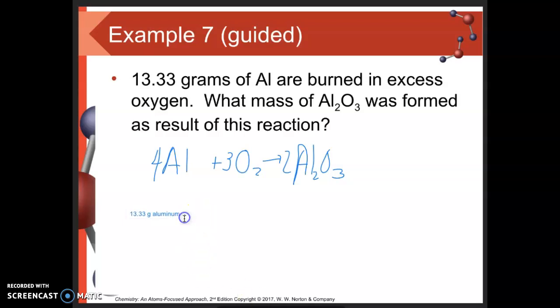We take 13.33 grams and multiply by a fraction. The fraction is the molar mass of aluminum: 26.98 grams per mole. Now that I have moles of aluminum, I convert it to moles of aluminum oxide using the mole ratio from the balanced equation: two moles of Al2O3 for every four moles of aluminum.